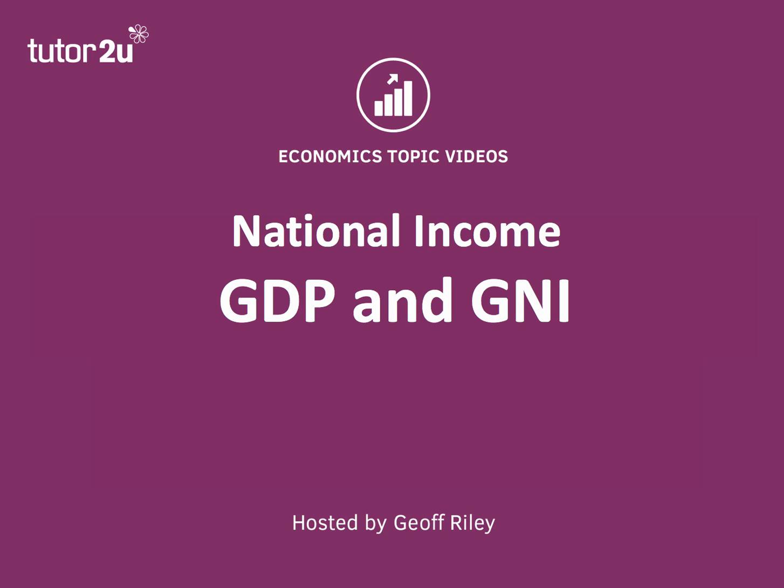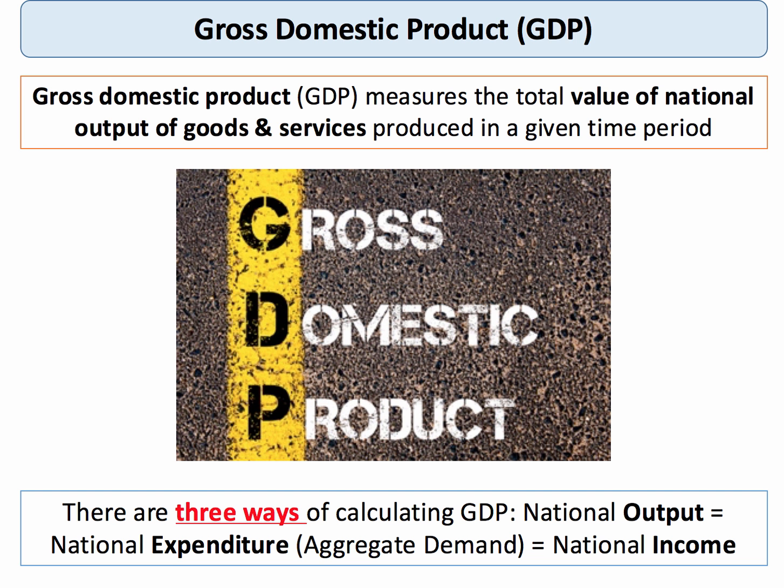Hi there. Here's a short topic video on the difference between GDP and GNI. GDP is Gross Domestic Product and it measures the total value of the production of goods and services within the geographical boundaries of a country over a given period of time, for example one year.